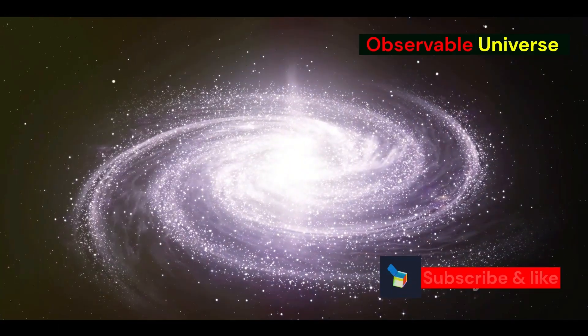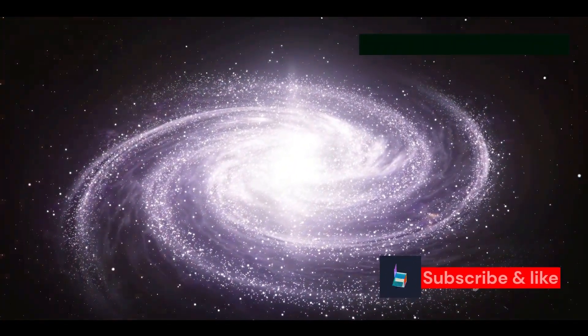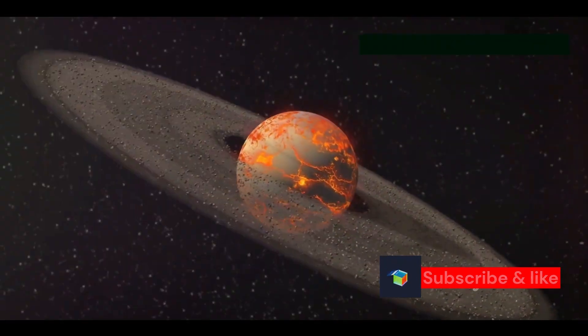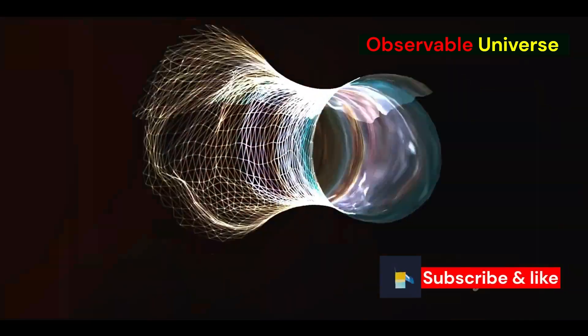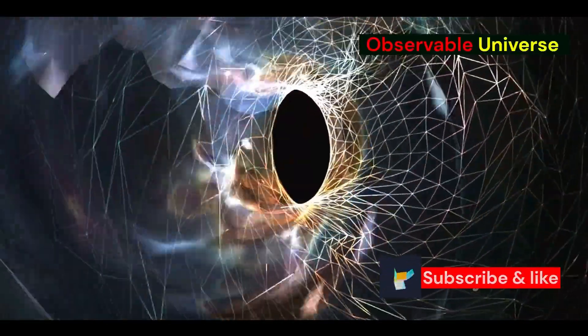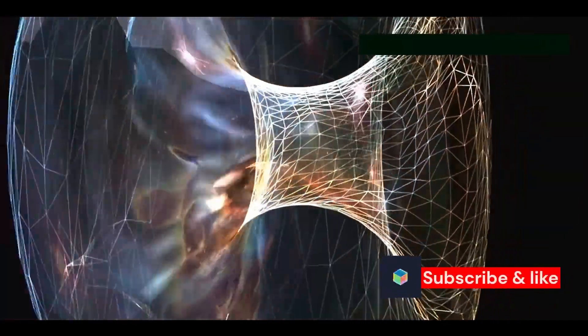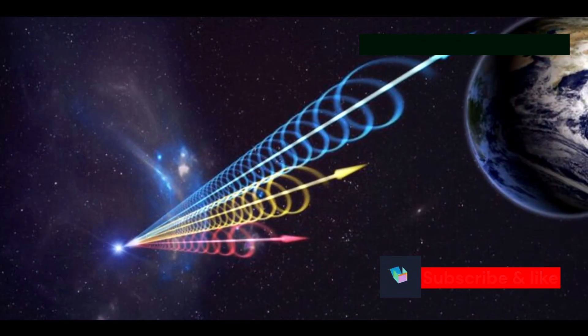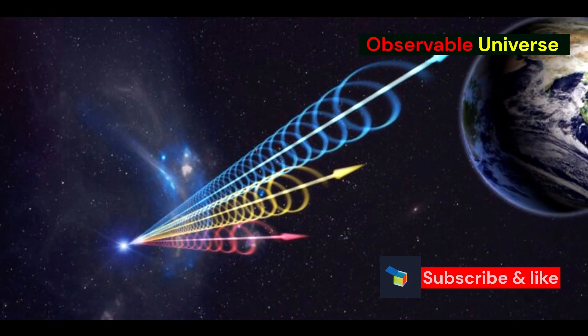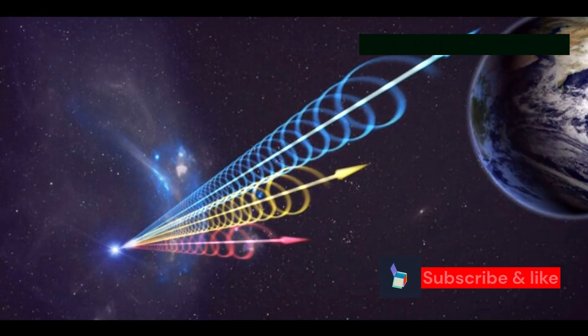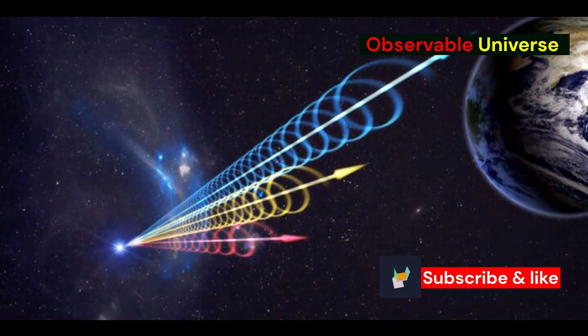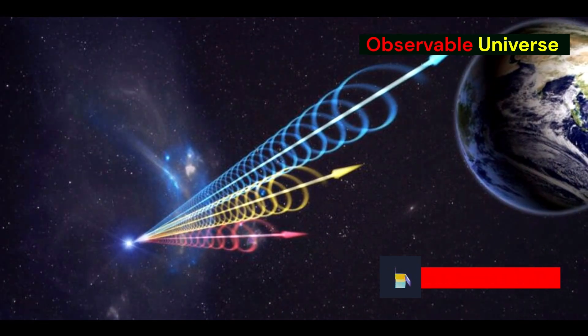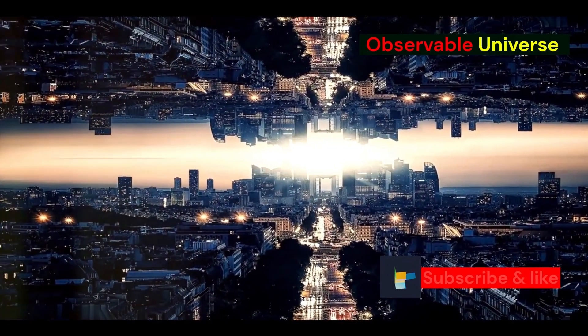Even within our observable universe, there are still many mysteries to unravel. Two of the most profound are dark matter and dark energy—invisible entities that make up the vast majority of the universe's mass-energy budget. Dark matter, as its name suggests, doesn't interact with light, making it invisible to our telescopes. However, its gravitational influence is evident in the rotation of galaxies and the clustering of matter on cosmic scales. We know it's there, but its true nature remains elusive.